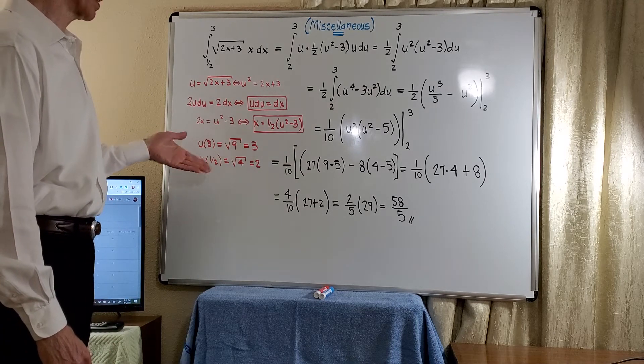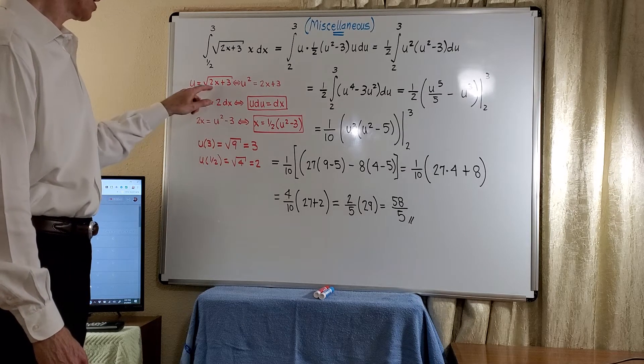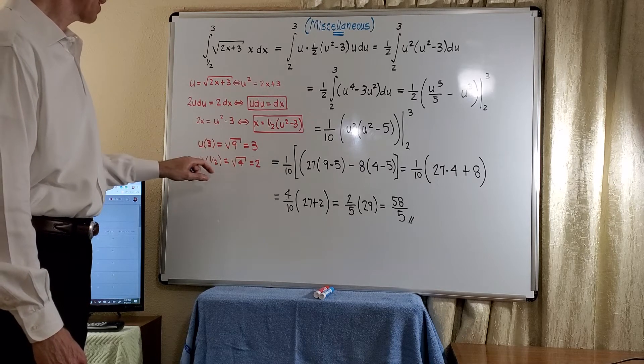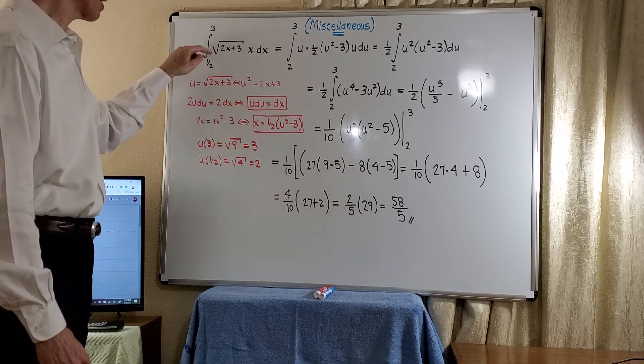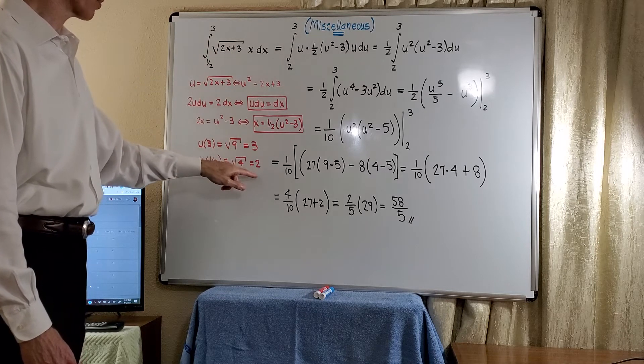And then with this technique, we can go ahead and change the limits. When we put in 3 here, we get 6 plus 3, which is 9, square root of 9 is 3. And then when we put in 1/2 or substitute 1/2, we get 1 plus 3, square root of 4 is 2.